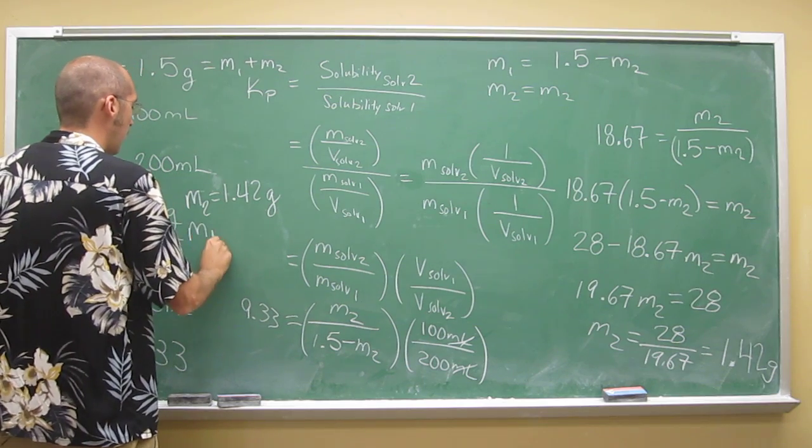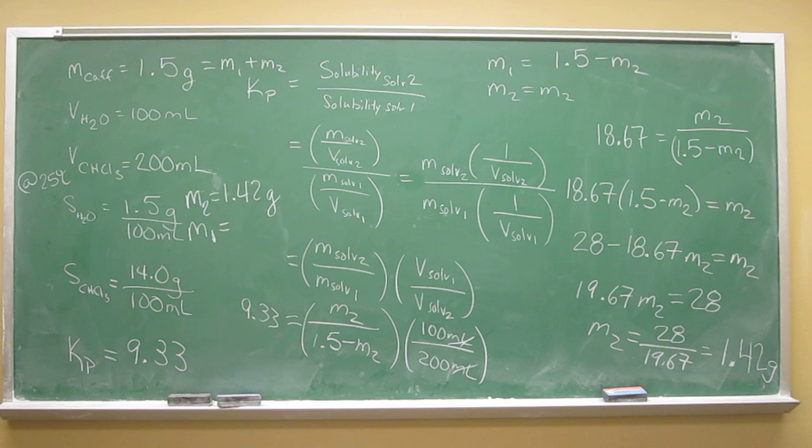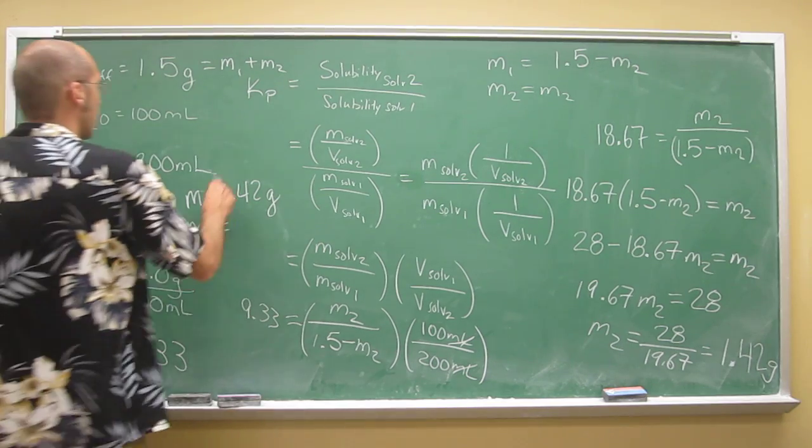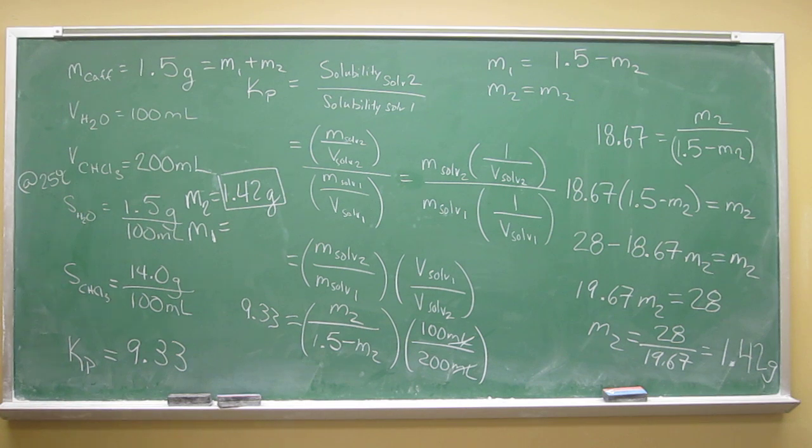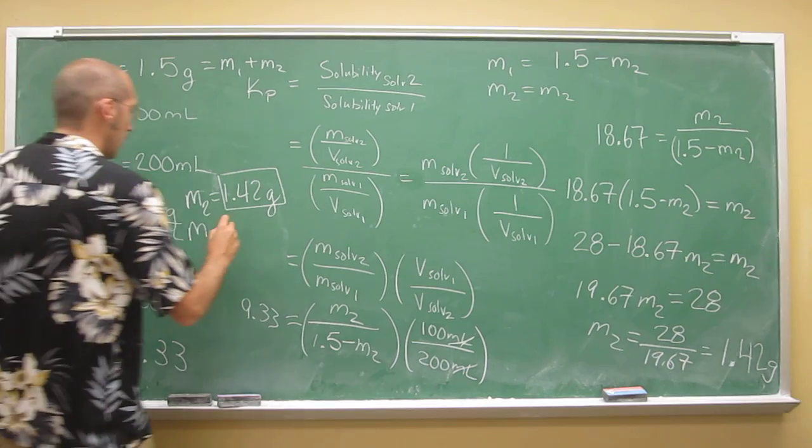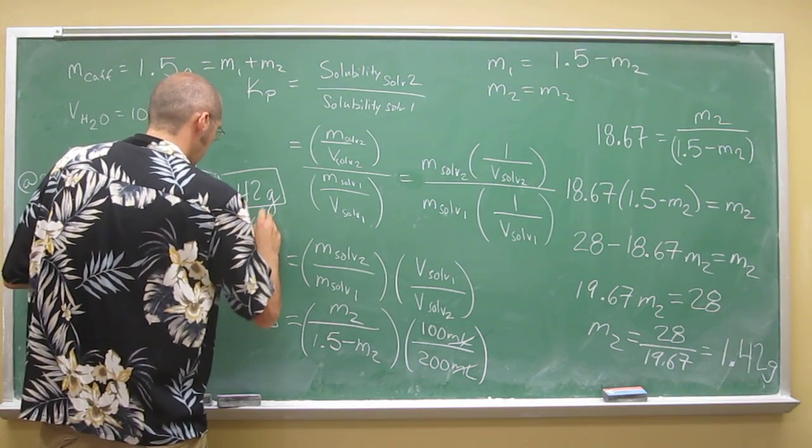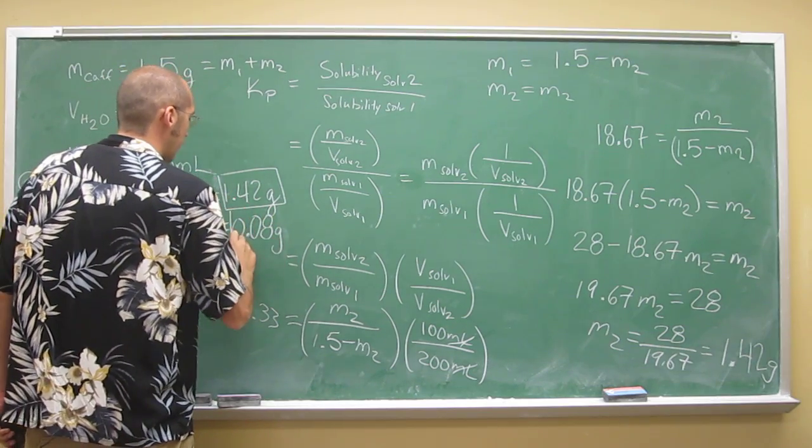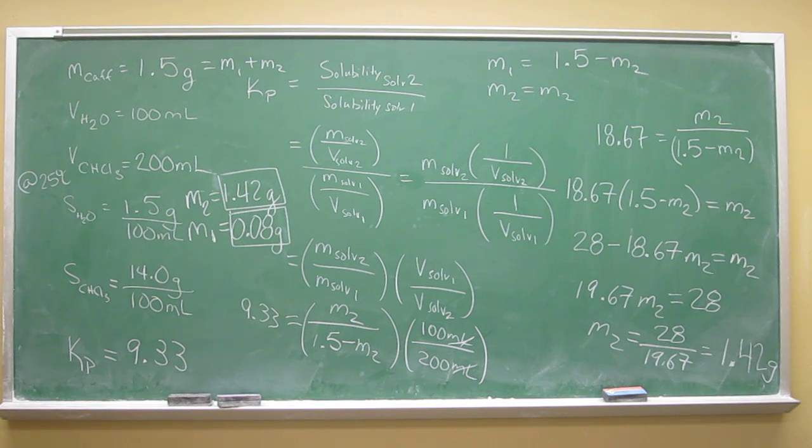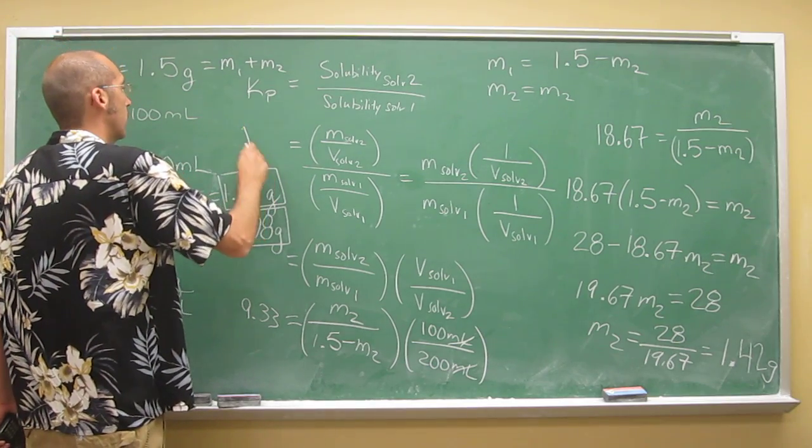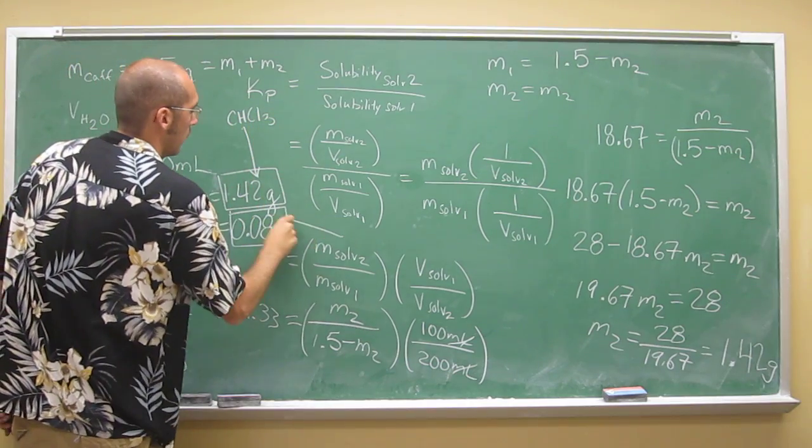So the mass of 1, so I think that's one of the questions. What quantity of caffeine will be present in the 200 mL chloroform layer after the extraction? Well, it's going to be that, 1.42. And the mass that's going to be left in the water layer is going to be 1.5 minus 1.42. So that's going to be 0.08 grams left in the water. So that's the answer to B. This is how much is left in the chloroform, this is how much is left in the water.